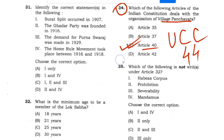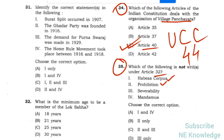Question 35: Which of the following is not a right under Article 32? Habeas corpus is there, prohibition is there, but certiorari (quo warranto) is not. Answer provided accordingly.